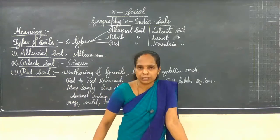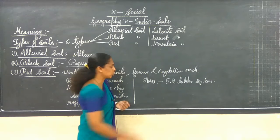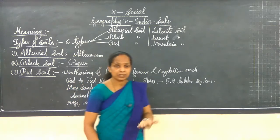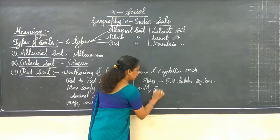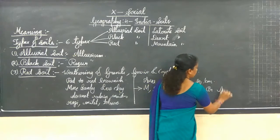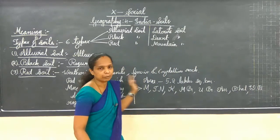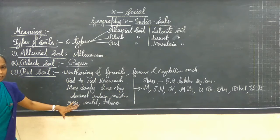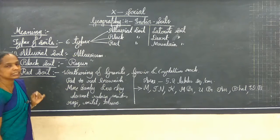Red soil can be seen in Tamil Nadu, southern part of Karnataka, Maharashtra, Madhya Pradesh, Uttar Pradesh, Assam, Bihar, and West Bengal. So we understand the red soil - how it was formed, its color, crop pattern, and where it can be found.